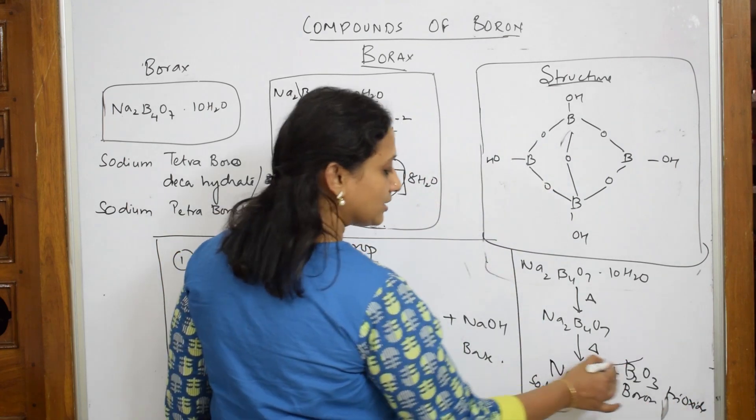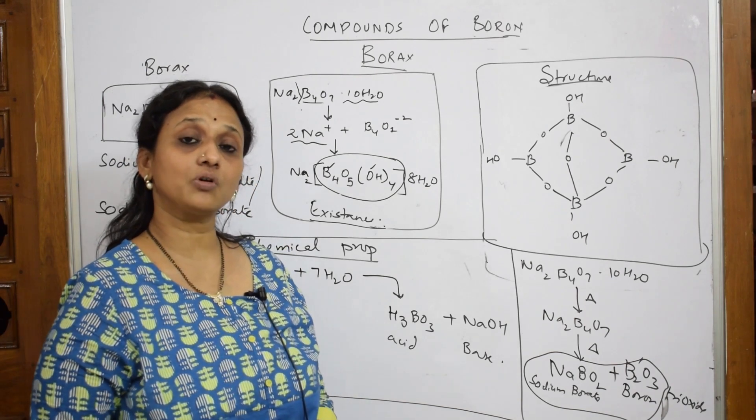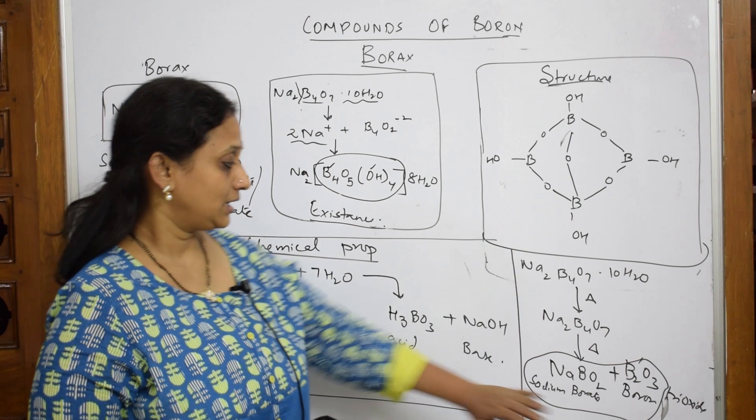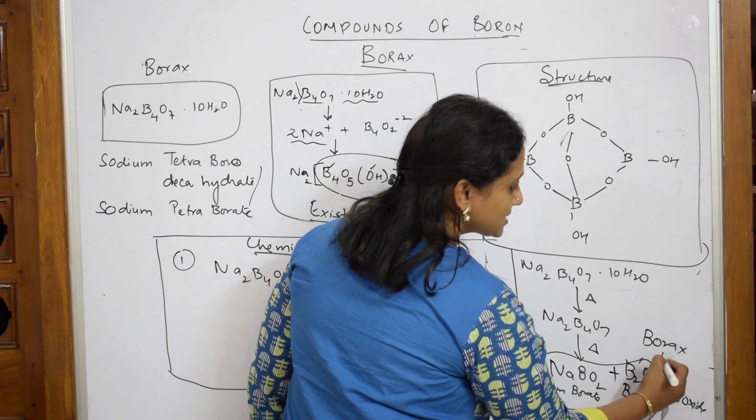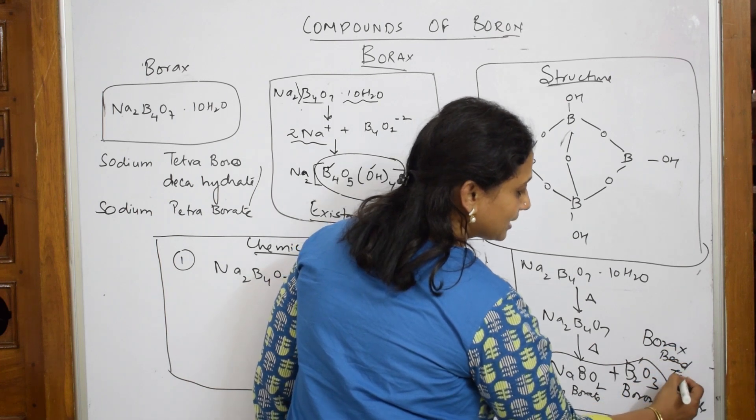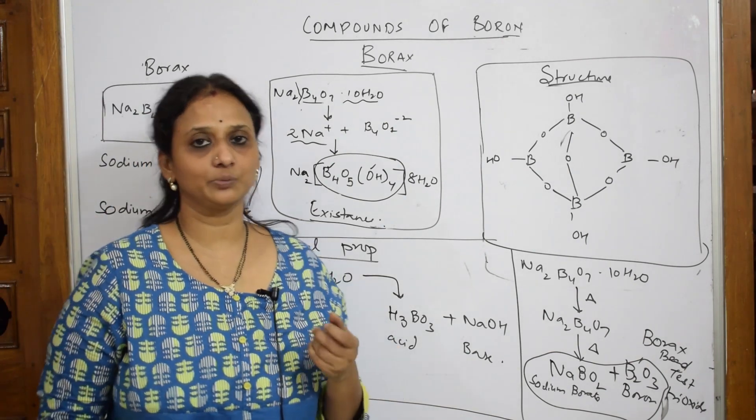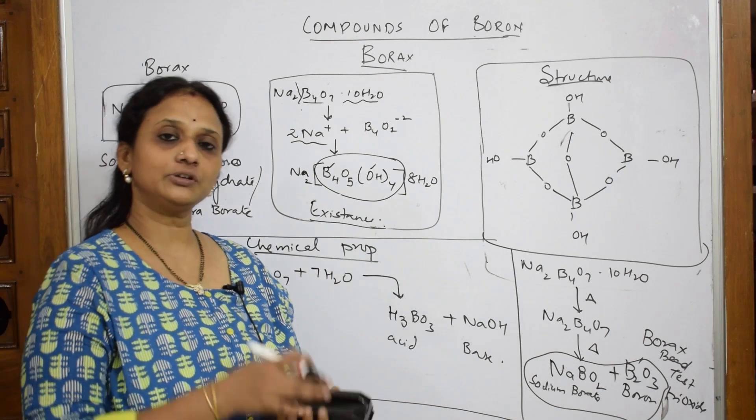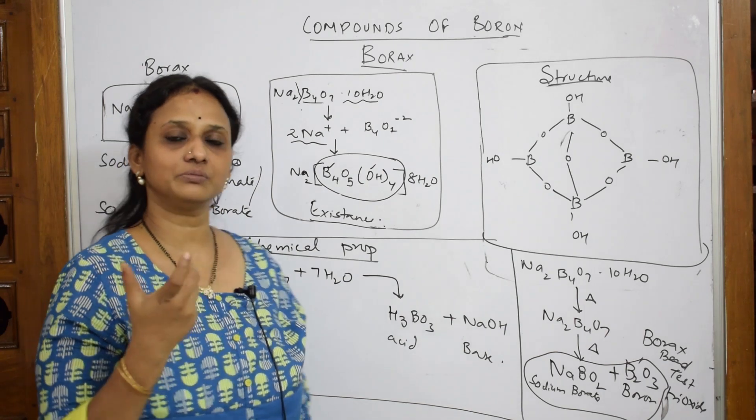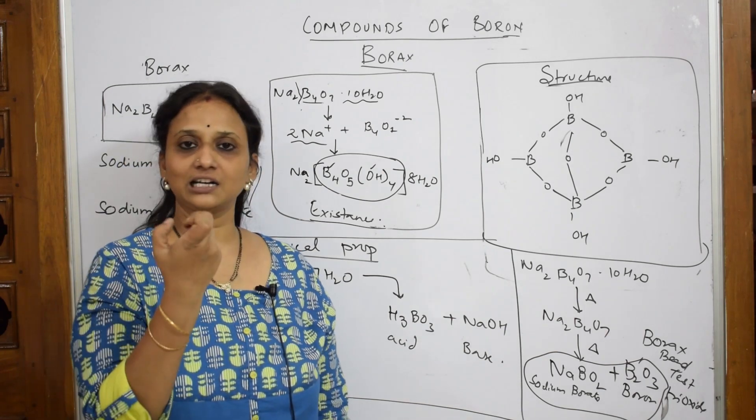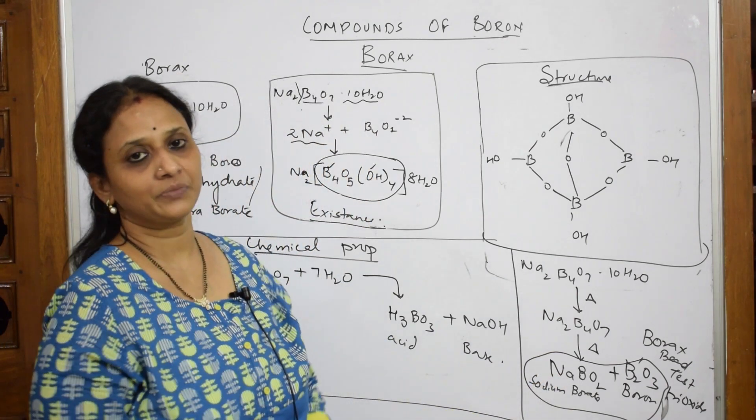Now, these two together, this particular test is used called borax bead test. Very important test for you all. Now, observe carefully. I'm going to use this compound for a test called borax bead test. So, I'll tell you what is borax bead test. Observe carefully. So, what we do is, we're going to take a platinum loop. So, after taking a platinum loop, you're going to just circle that platinum loop. And once you circle that platinum loop, just allow it to heat it and it will become red hot.